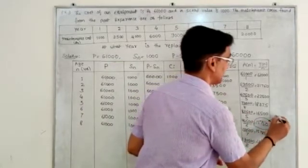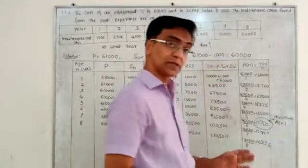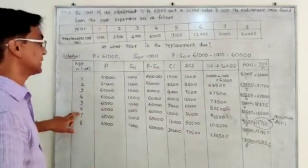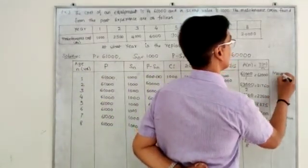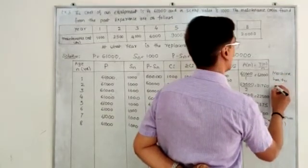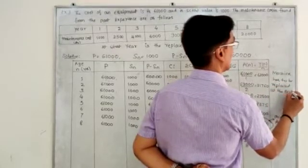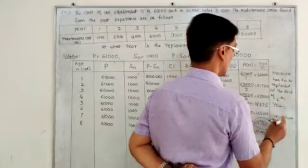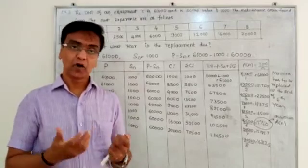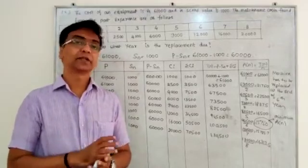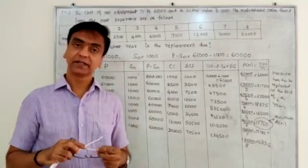The minimum annual average cost — the minimum A_N — is at the 6th year. So the machine has to be replaced at the end of the 6th year, because on the 6th year itself the average annual cost is minimum. Therefore, according to the replacement theory rule, when the average annual cost is minimum at the end of that year, we need to replace the equipment or the machine.